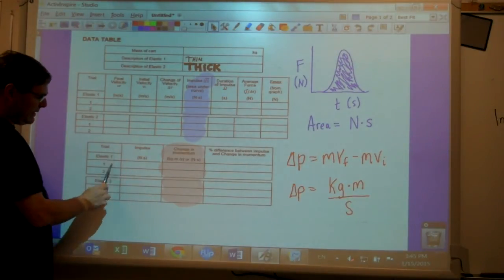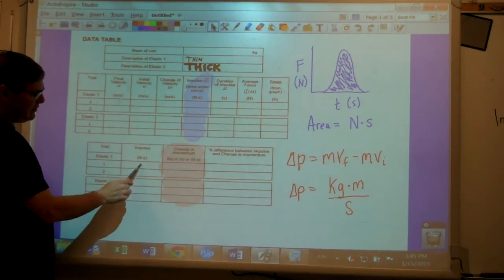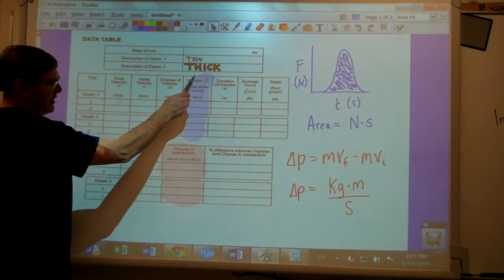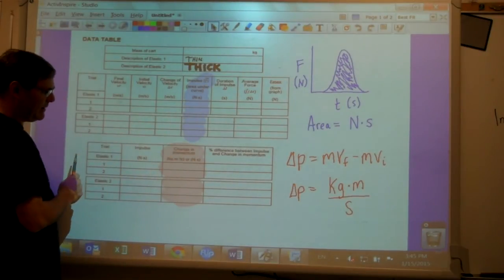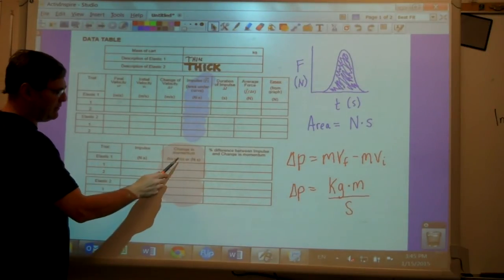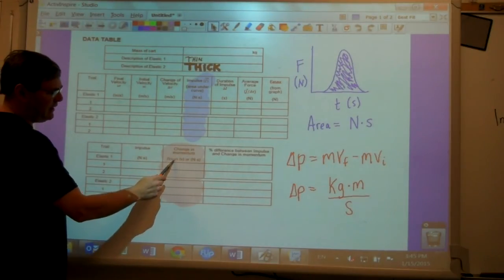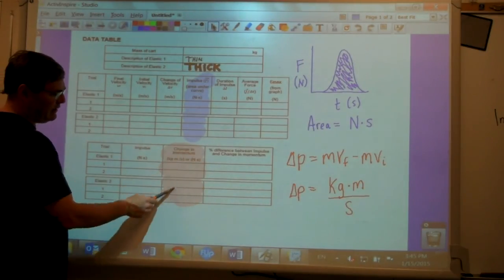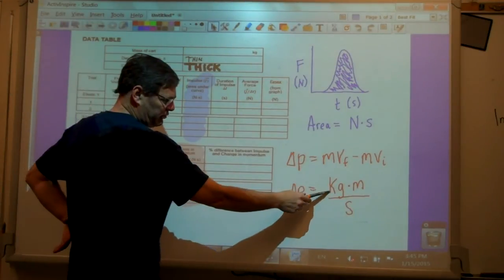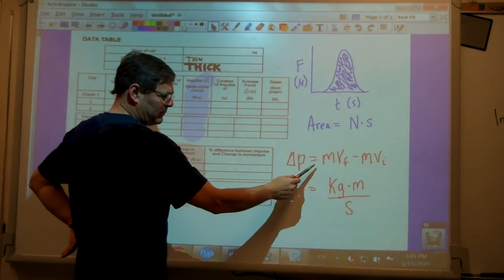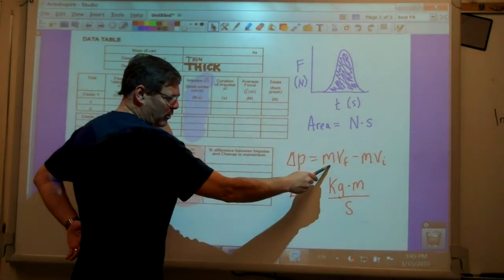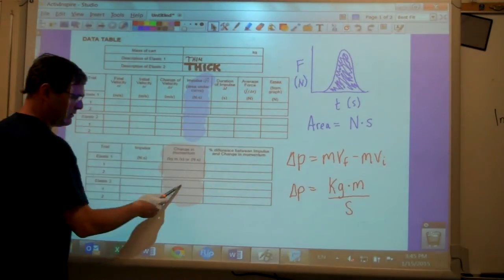And then in this last table down here, these newtons seconds numbers are the same as what you got from right there. And this change in momentum with units of kilogram meters per second. Whenever you see kilogram meters per second in this column, you're going to use your change in momentum from the motion detector, which is the final momentum minus the initial momentum.